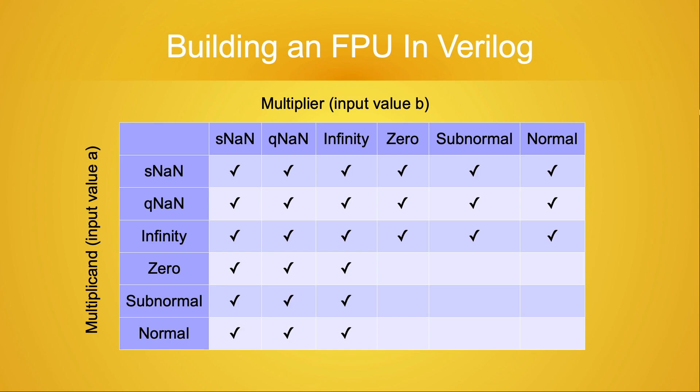The next case is trivially easy: multiplying by 0. 0 times 0, 0 times a subnormal number, and 0 times a normal number is obviously 0.